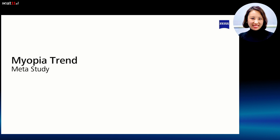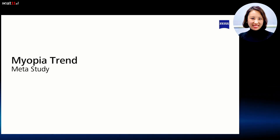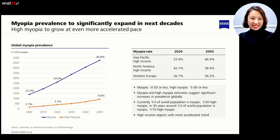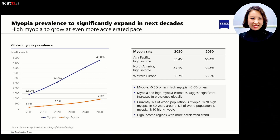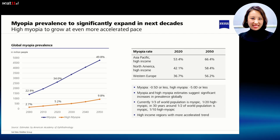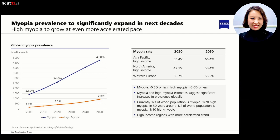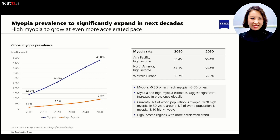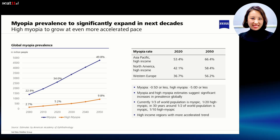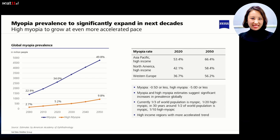Did you know about one third of the world population has myopia at the moment? This diagram on the left side shows a meta-study of myopia prevalence conducted by the American Academy of Ophthalmology. Nowadays one third of the world population is myopic, and one in 20 people is even affected by high myopia. The study also shows that in the next 30 years, almost every second person will be affected by myopia.